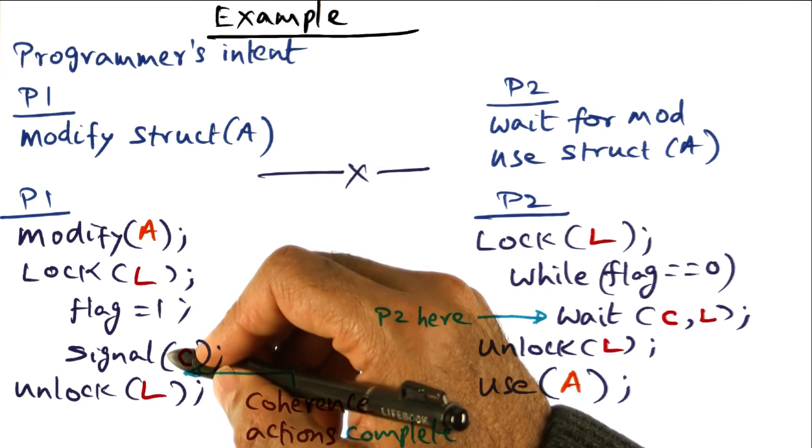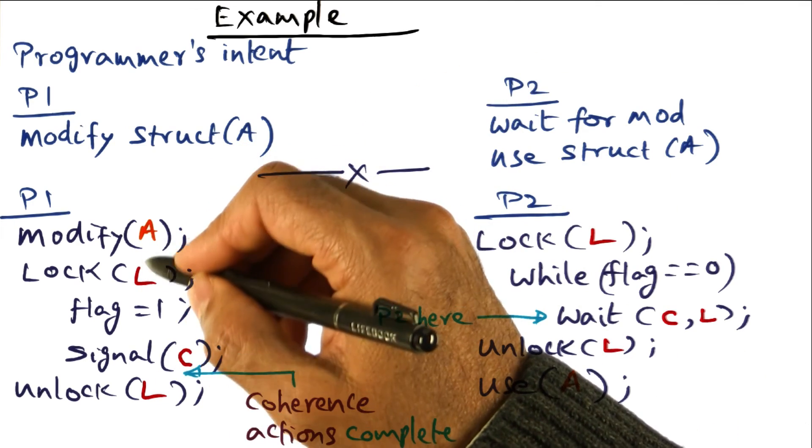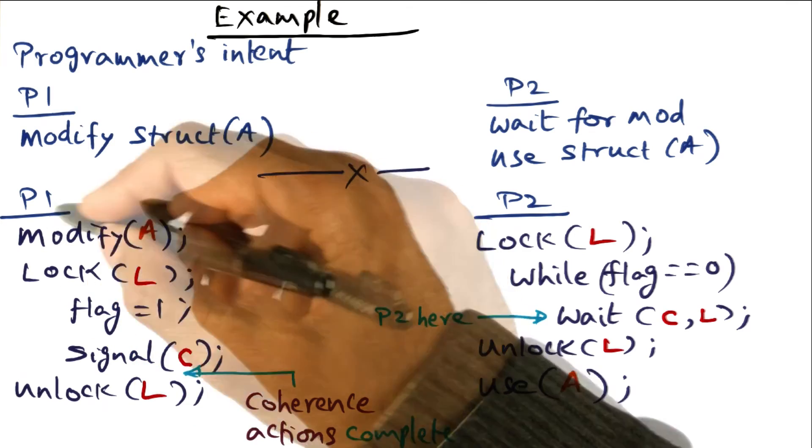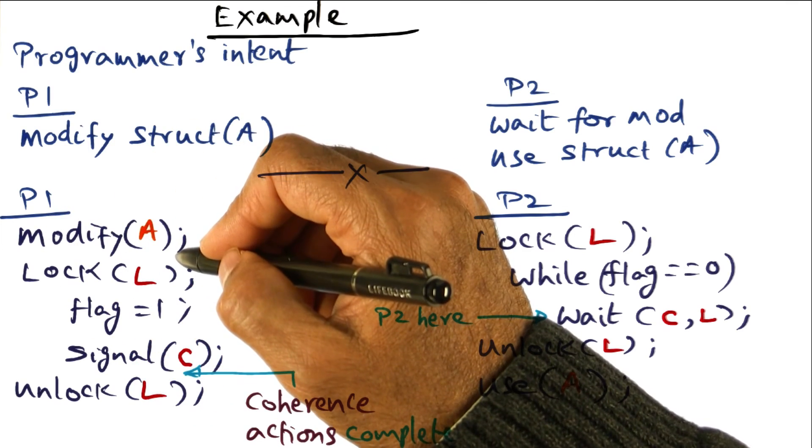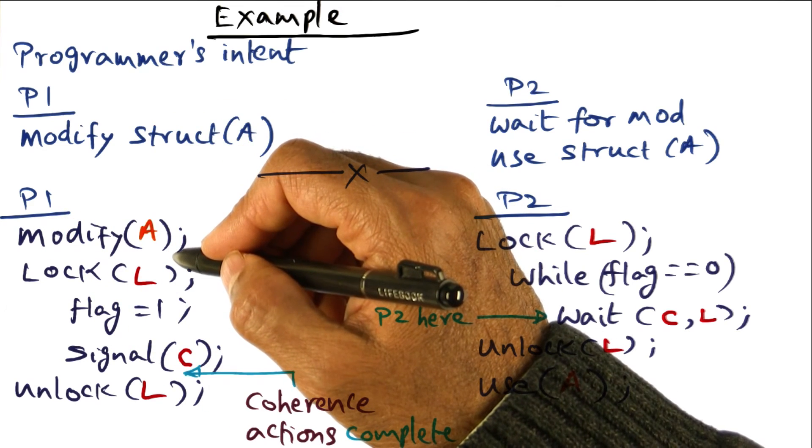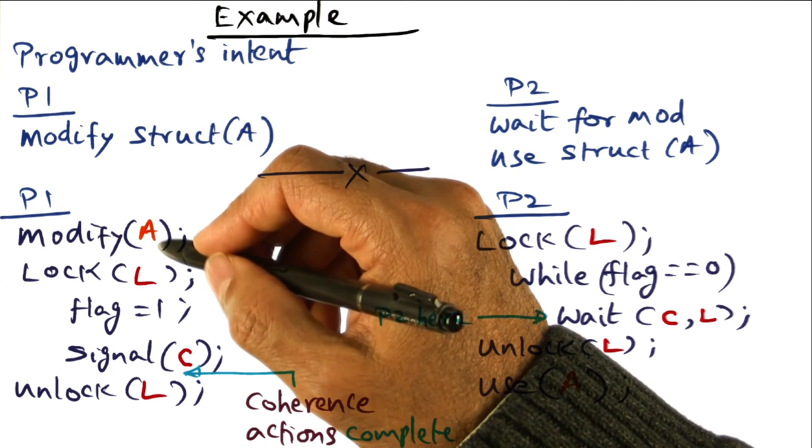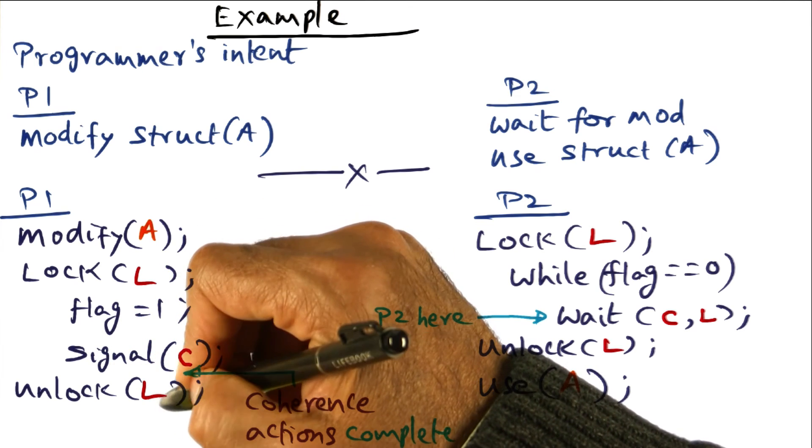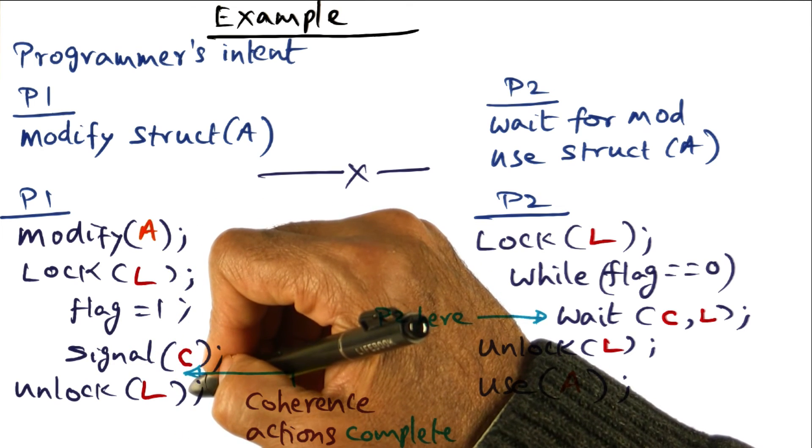But with the RC memory model, what it is allowing you to do is you can do the data structure modification you want, and the coherence actions inherent in those modifications may be going on in the background. But you can continue with your computation until you hit this unlock point.